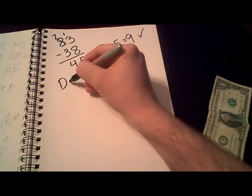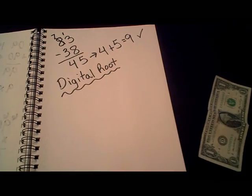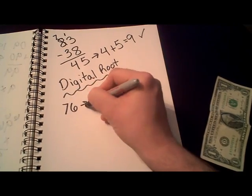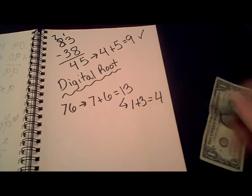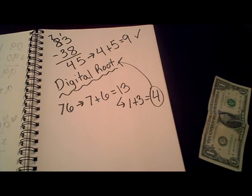Interestingly enough, mathematicians actually have a name for this idea of summing up the digits of a number. They call it a digital root. So, 76 is just 7 plus 6, which equals 13. We add up the 1 and the 3, and we get 4. So, 4 is the digital root of 76.